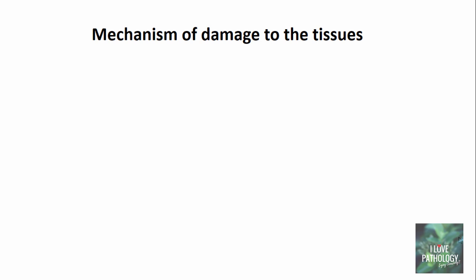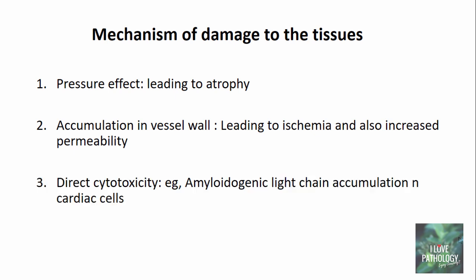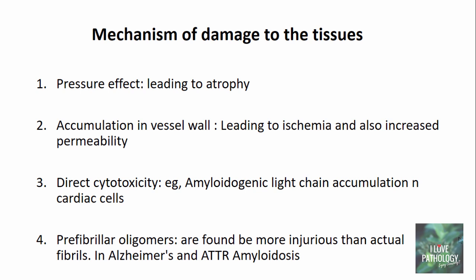Now let us see the mechanism of damage by these amyloid proteins to the tissues. The first and foremost mechanism is pressure effect, which can lead to atrophy. The second mechanism is deposition in the vessel wall, causing narrowing of the lumen and subsequently ischemia, as well as increased permeability of blood vessels. Amyloid proteins can also be directly cytotoxic — for example, amyloidogenic light chain accumulation in cardiac cells. Lastly, pre-fibrillar oligomers, which form even before fibrillar proteins, are found to be more injurious than the actual fibrils, particularly in Alzheimer's disease and ATTR amyloidosis.